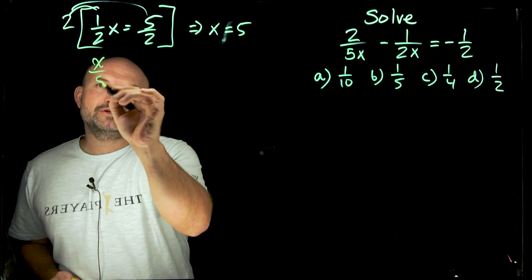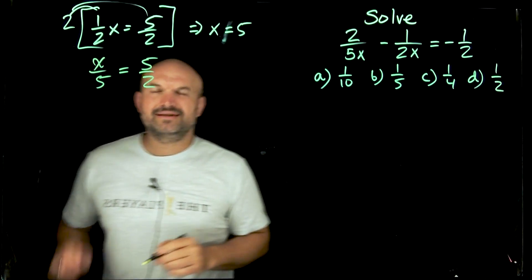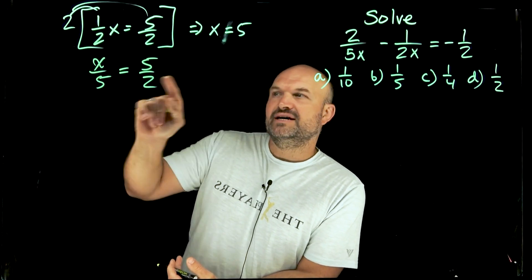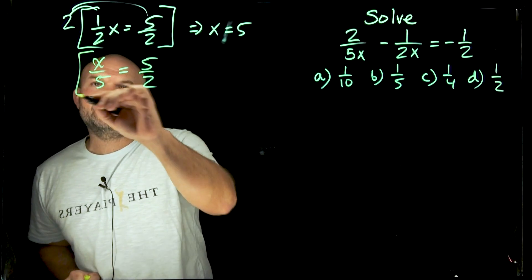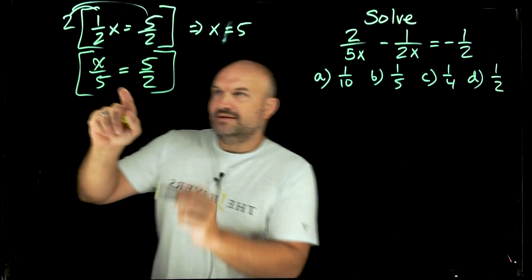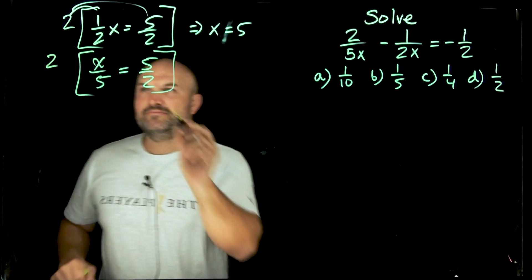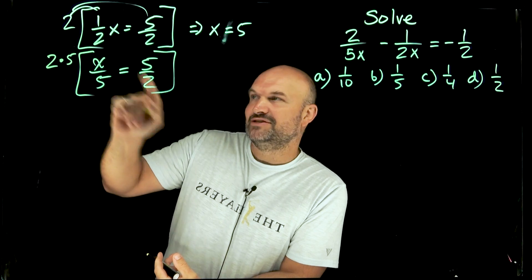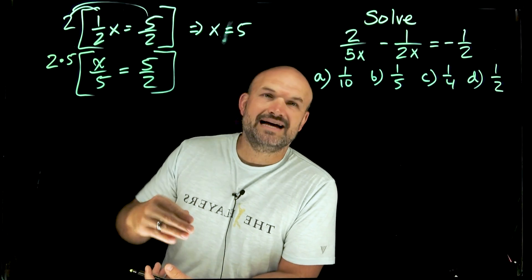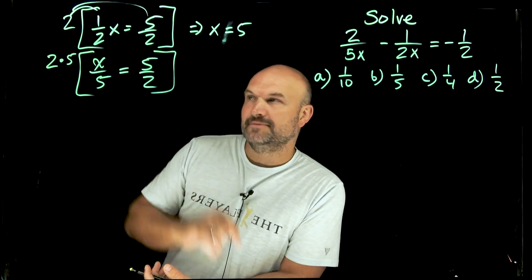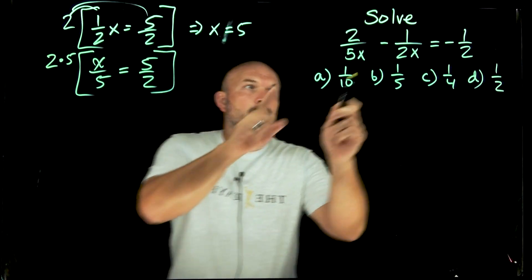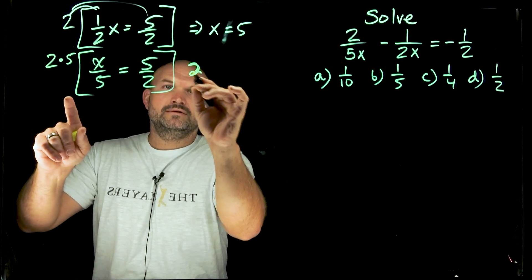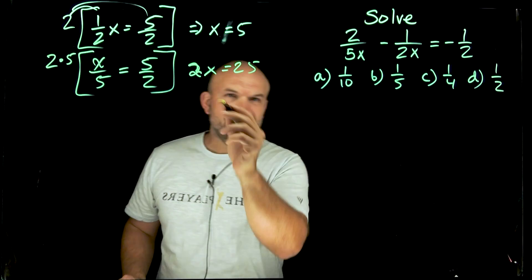But what if I had something like x over five equals five halves? Now I can't just pick two, because five does not evenly divide by two. However, if I multiply by two times five — that's ten — then the five divides into my five and the two divides into my two. That is what we call the least common multiple, or the least common denominator. You always want to identify that least common denominator when you have multiple fractions. In this case that's ten, and when I multiply ten on both sides I get 2x equals 25. Notice how this gives me an equation without fractions.